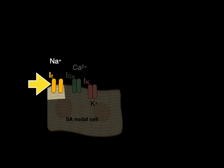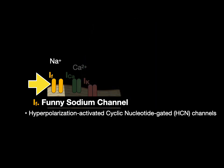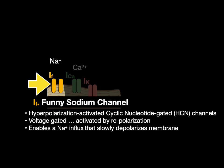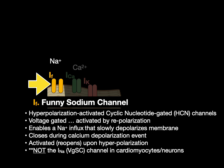The first channel is the IF, or funny sodium channel. Not funny like haha, but funny because it's unique — it's also called a hyperpolarization-activated cyclic nucleotide-gated (HCN) channel. It's voltage gated and what makes it funny or unique is it's activated by a repolarizing event, not a depolarizing event. It enables a sodium influx that slowly depolarizes the membrane, then closes during the calcium depolarizing event around negative 40 millivolts, and reopens on the repolarizing event. This is not the INa sodium current from voltage-gated sodium channels seen in cardiomyocytes and neurons — funny sodium channels are found only in the SA and AV nodal cells.